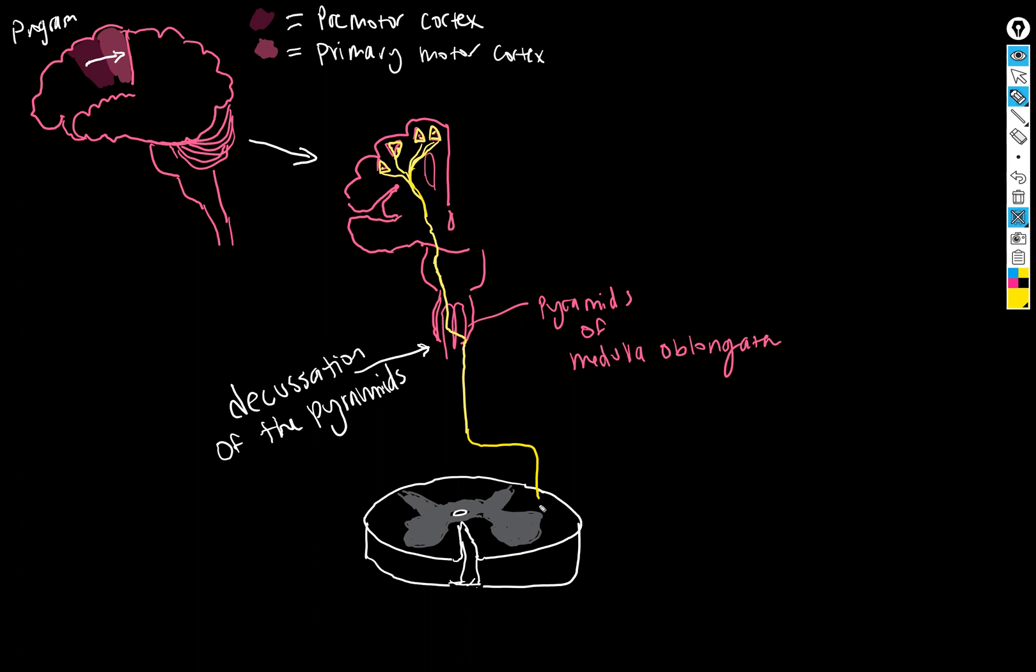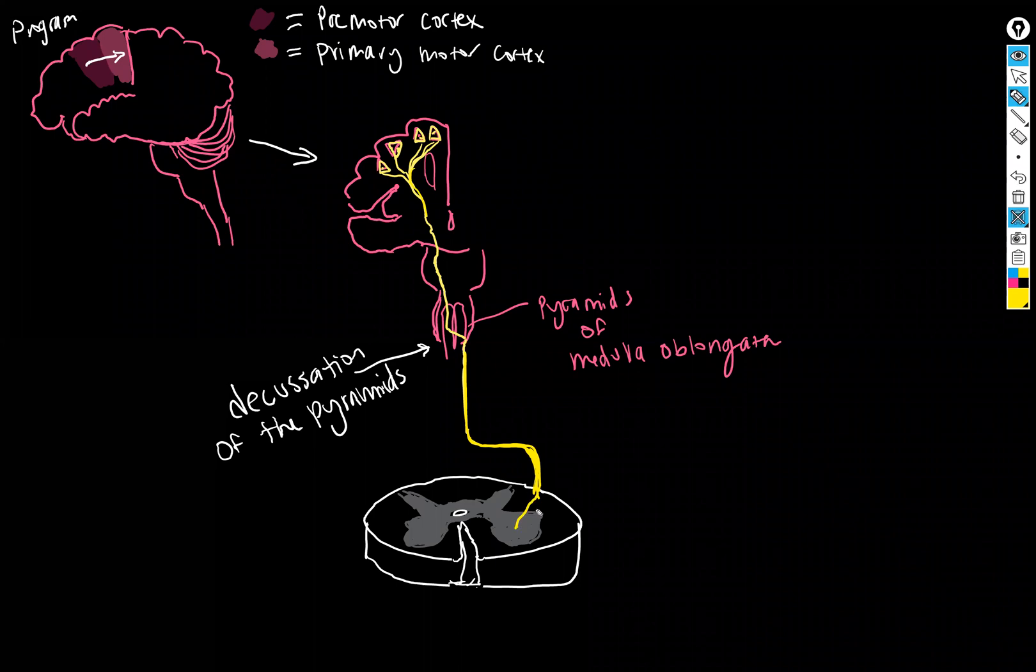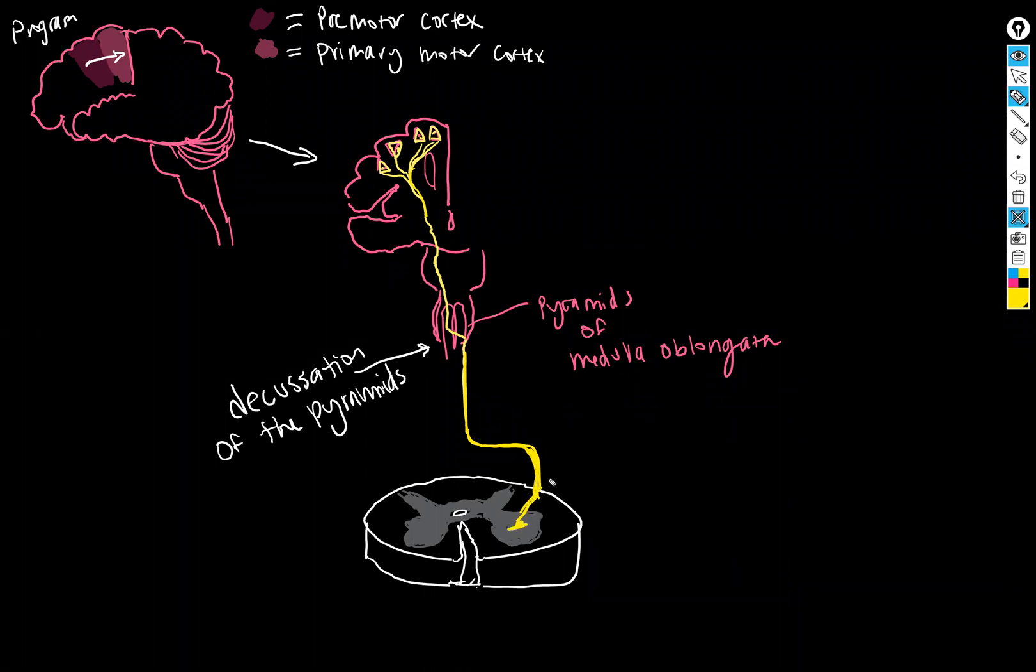The lateral corticospinal tract - so that's the white part of the spinal cord - and then they're going to synapse at whatever the appropriate level is. So I'm guessing that this spinal cord slice is probably in the brachial plexus area because I'm talking about an arm motion. So we're going to have it synapse here on a cell body of a somatic motor neuron in the anterior gray horn of the spinal cord.